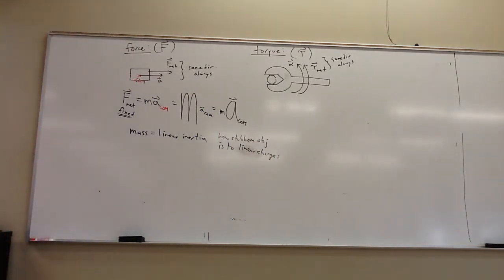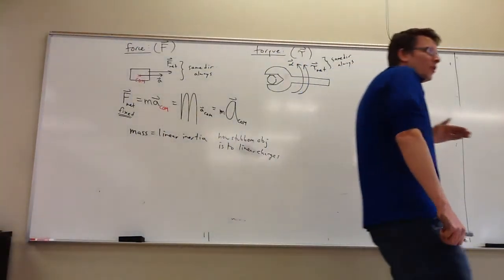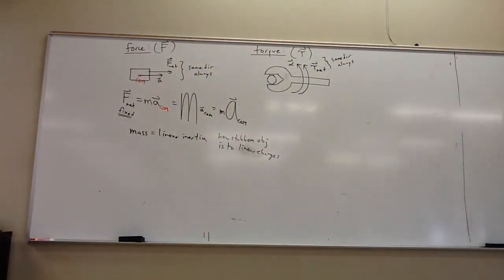I guess I'll put how stubborn the object is to linear changes. So how stubborn is it to want to stay on the line that it's already on and not want to change off that line, not want to speed up or slow down along that line, just doing exactly what it's already doing.